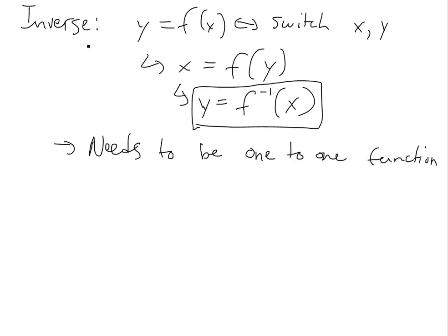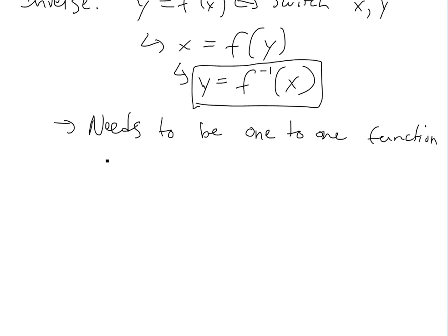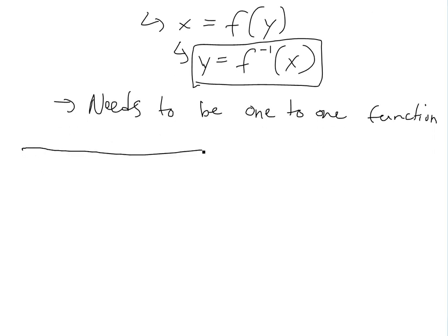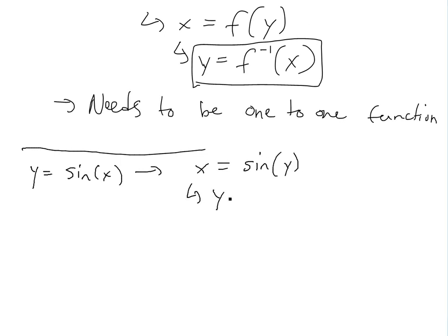So let's look at a sine function right now. Let's go with y equals sine of x. We would switch the x and y, so it will be x equals sine y, and then we solve for y. The inverse would be sine negative one of x, or equals arc sine of x. You can write it either way.